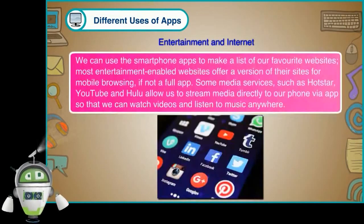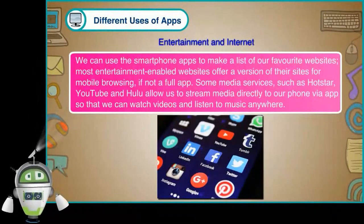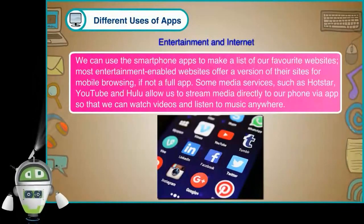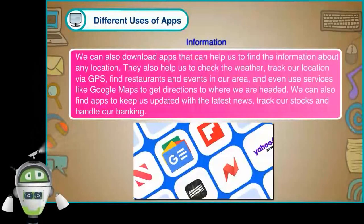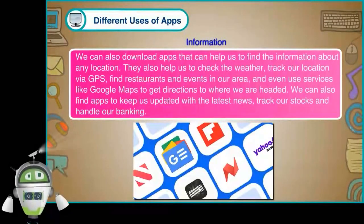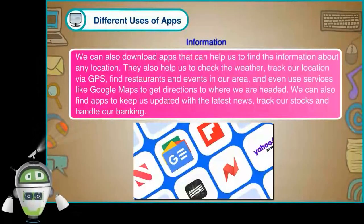Entertainment and Internet. We can use smartphone apps to make a list of our favorite websites. Most entertainment-enabled websites offer a version of their sites for mobile browsing if not a full app. Some media services such as Hotstar, YouTube and Hulu allow us to stream media directly to our phone via app, so that we can watch videos and listen to music anywhere. Information. We can also download apps that help us find information about any location, check the weather, track our location via GPS, find restaurants and events in our area, and even use services like Google Maps to get directions. We can also find apps to keep us updated with the latest news, track our stocks and handle our banking.